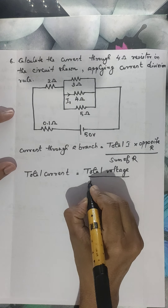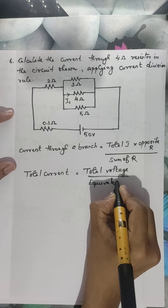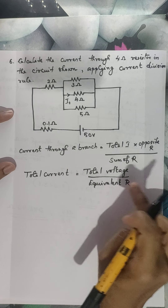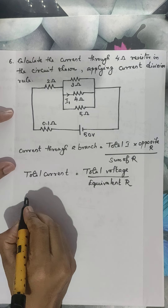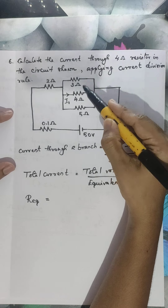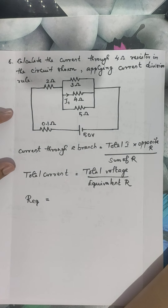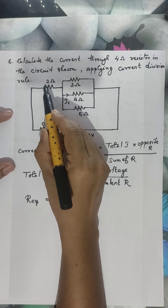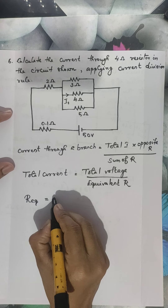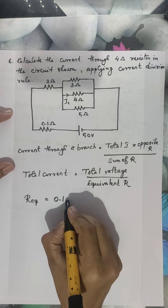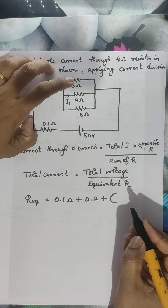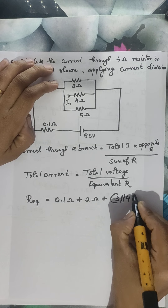Total current will be equal to total voltage applied across the circuit divided by total equivalent resistance of the circuit. Total voltage is given as 50 volts. Examining the circuit, these three resistors are in parallel: 3 ohm in parallel with 4 ohm in parallel with 5 ohm, and this parallel combination is in series with the 2 ohm and the 0.1 ohm resistors.